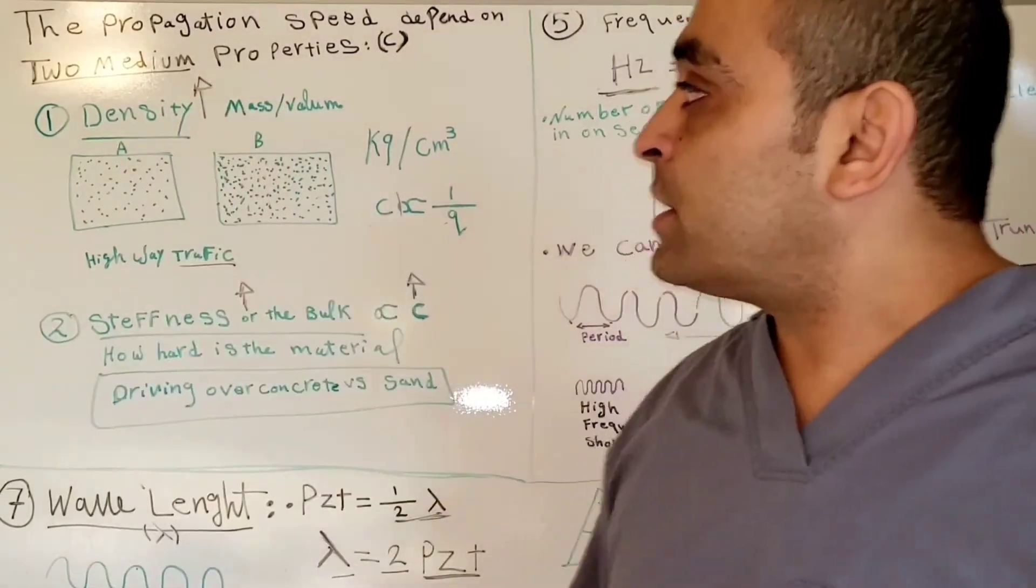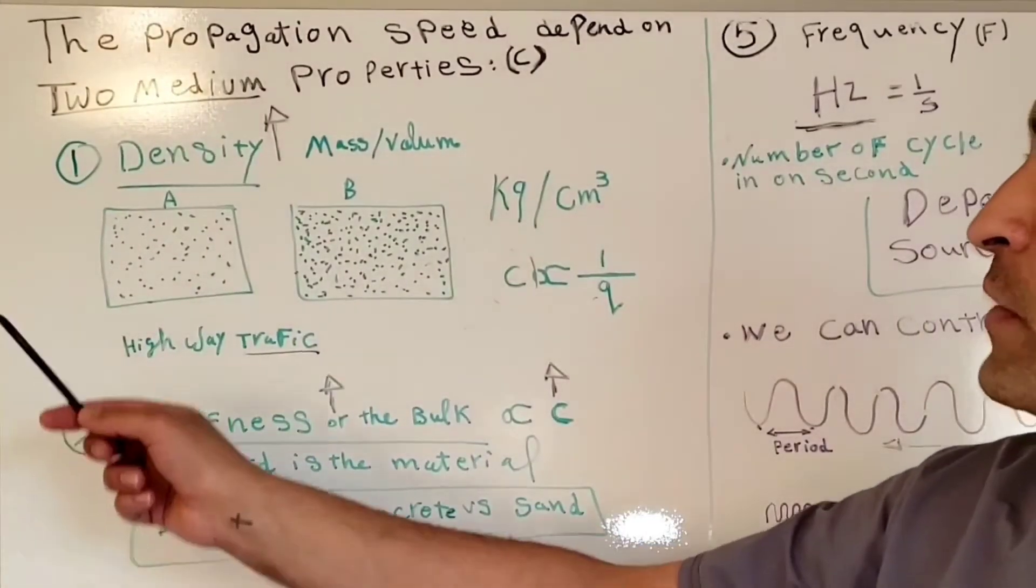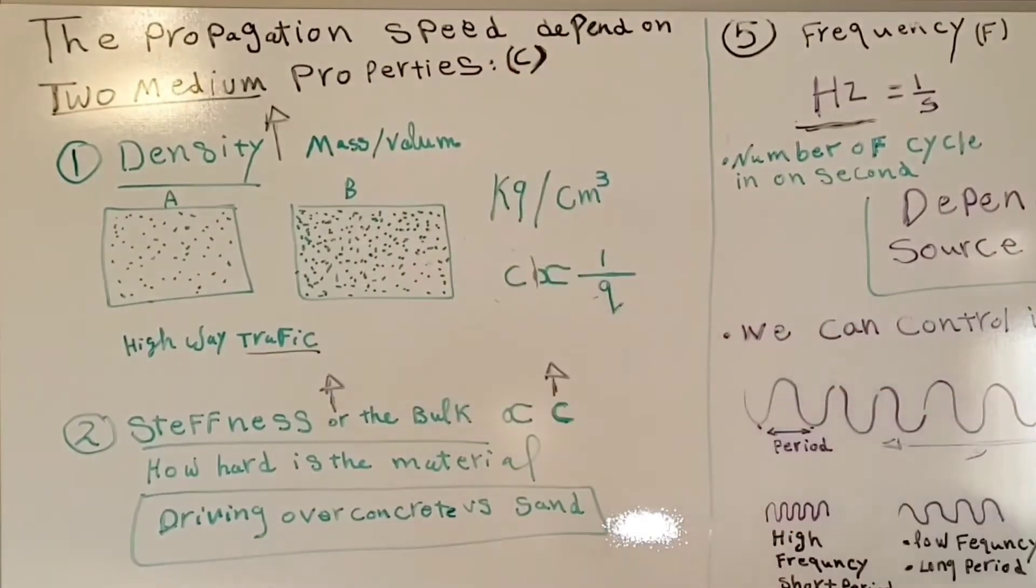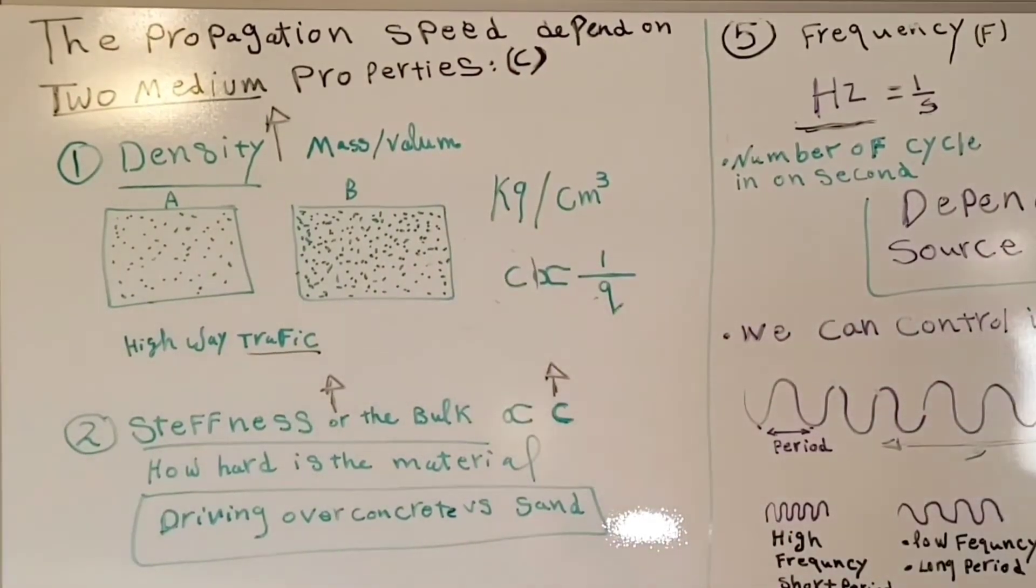There are two factors of the medium that affect the propagation speed. The first factor is the density. The second one is the stiffness or the bulk.